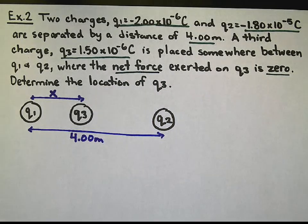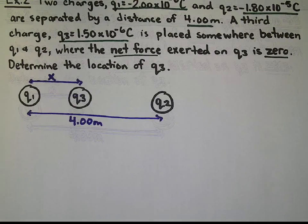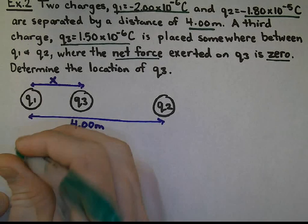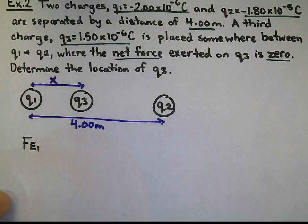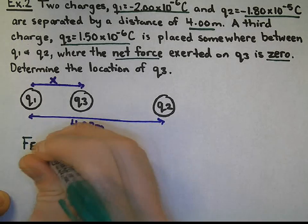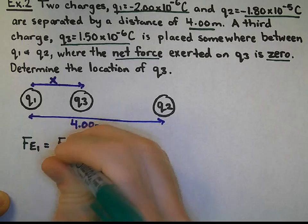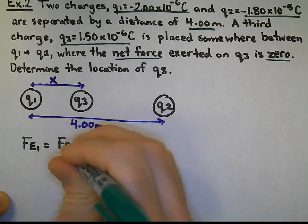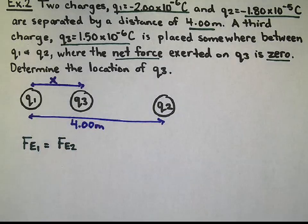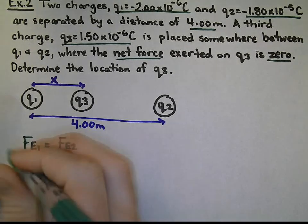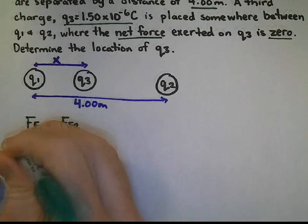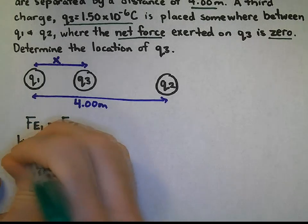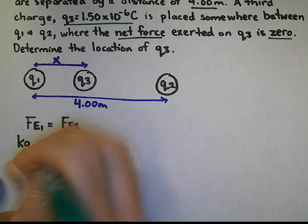And what does that tell us to solve for this problem? That basically tells us that the electric force on Q1 is equal to the electric force on Q2. And the electric force on Q1 will be equal to K Q1 Q3 all over its distance squared.